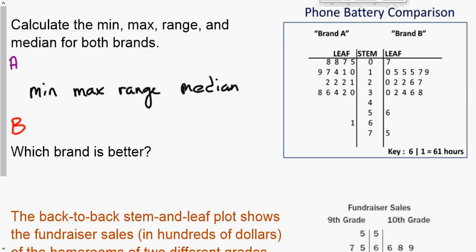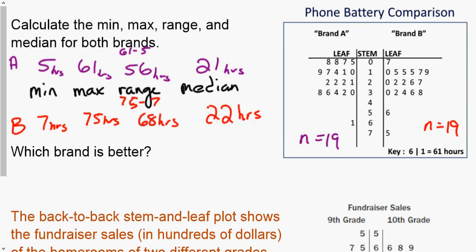For A you should have found the minimum was 5 hours, the max was 61 hours, the range then subtract the two and you get 56 hours. The median, again there's 19 terms divided by 2 is 9.5 so you calculate the tenth term.